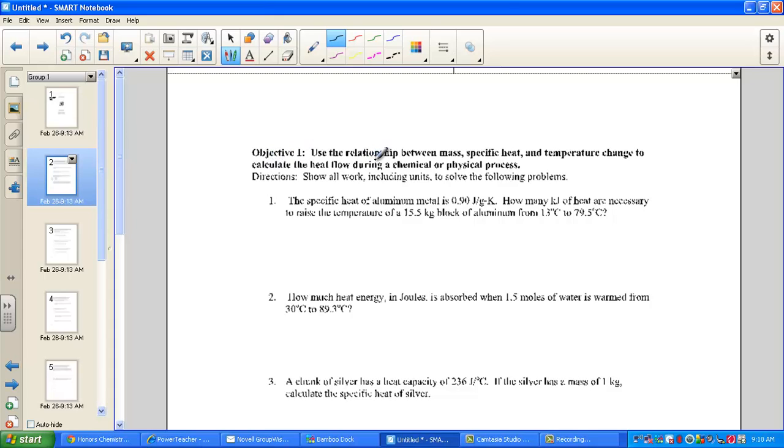Reading that together, it's asking for the relationship between mass, specific heat, and temperature change to calculate heat flow during a chemical or a physical process. This entire objective makes use of the Q equals mc delta t equation, where Q, of course, stands for heat in a physical process. Heat comes to us in a unit as joules. m stands for the mass of our object given to us in a unit of grams.